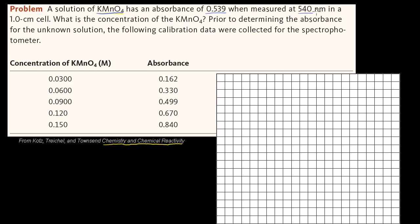The 540 nanometers is the wavelength of light we're measuring the absorbance at. This is probably a special wavelength for potassium permanganate — one it tends to absorb well — so it'll be sensitive to how much solute is in the solution. The cell is 1 centimeter, which is just the path length. The question is: what is the concentration of potassium permanganate?